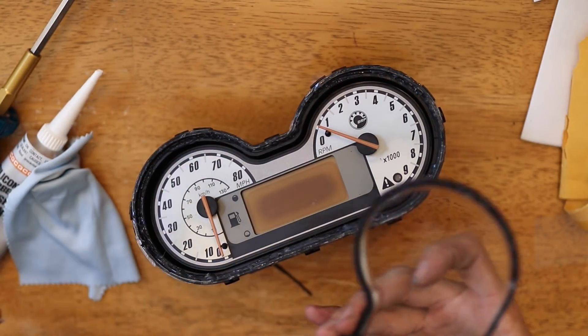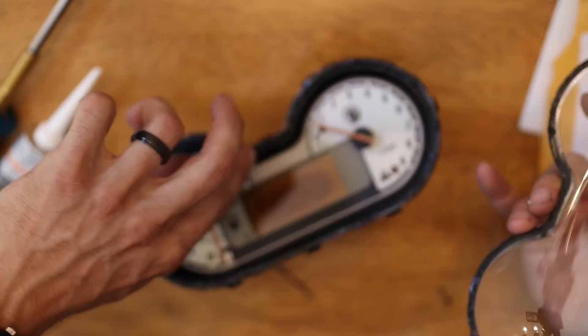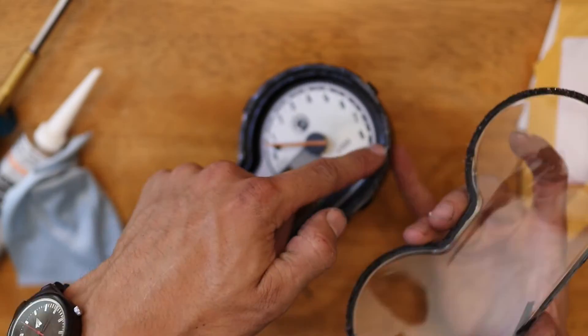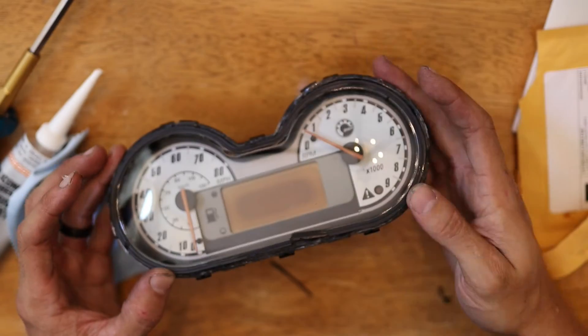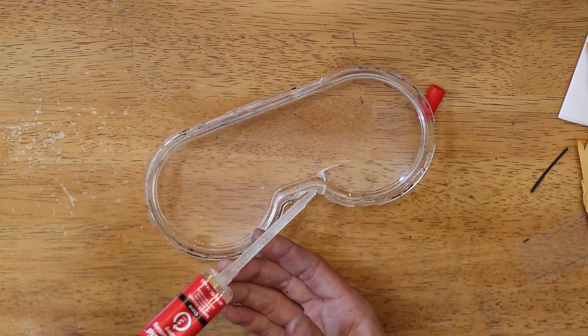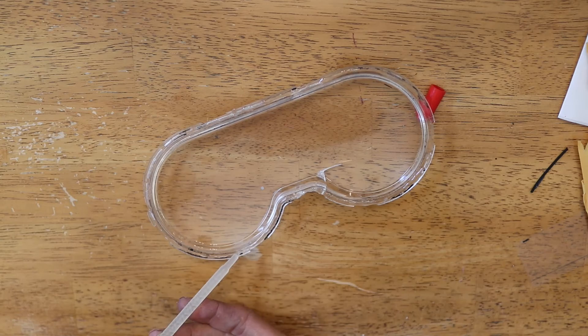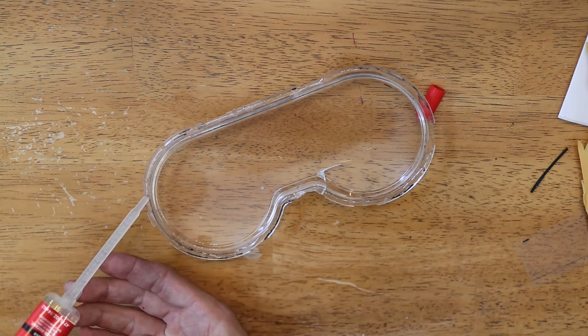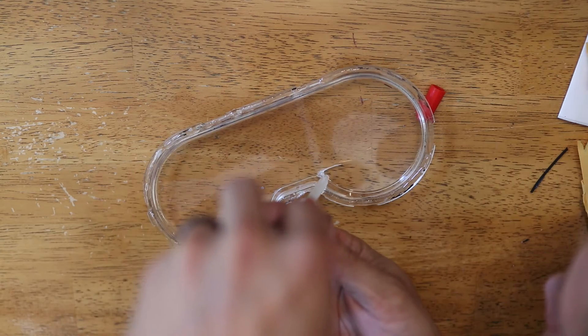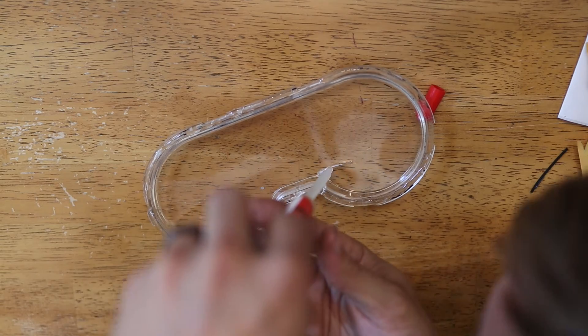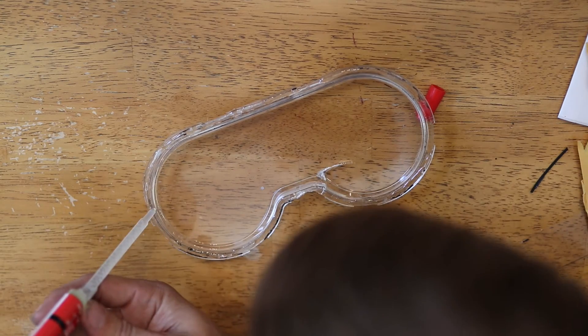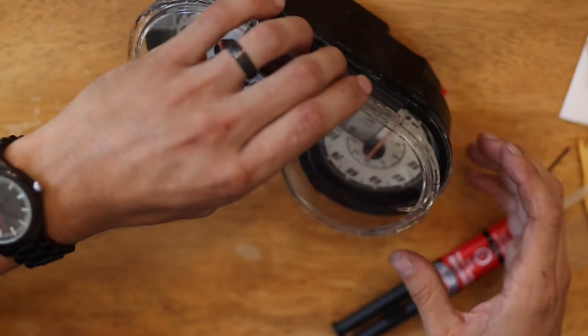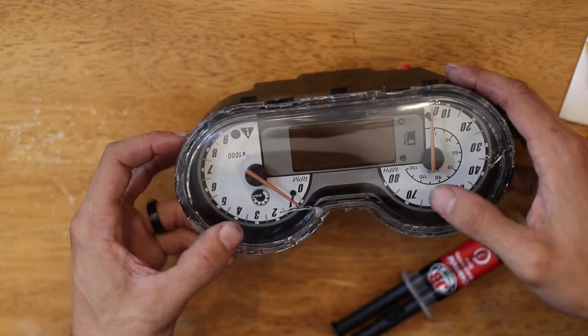If you cut around the housing, then Harbor Freight sells a plastic welder in the neighborhood of $70 or $80 and you can use some ABS plastic rods that you can find on Amazon for probably around $10. It is a little bit more expensive but as you can see here, you won't have to deal with cracks in your front plastic.